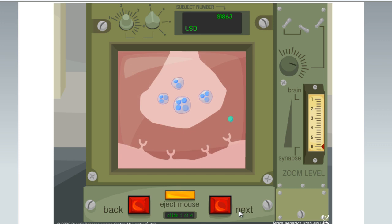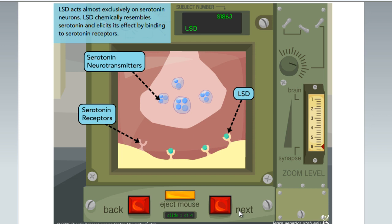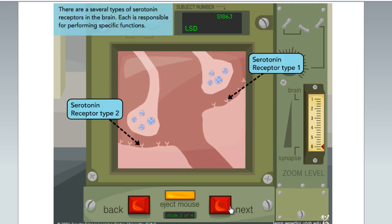LSD acts almost exclusively on serotonin neurons. LSD chemically resembles serotonin and elicits its effect by binding to serotonin receptors. There are several types of serotonin receptors in the brain. Each is responsible for performing specific functions.